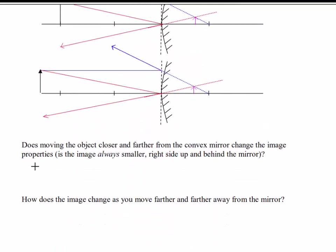So a couple of final questions. Does moving the object closer and farther from a convex mirror change the image properties? Or is the image always smaller, right side up and behind the mirror? It doesn't matter. It's always going to be the same. And does the image change as you move further and further away from the mirror? Well, for sure it does. The exaggeration of the shrinking is more impressive. As you move further and further from the mirror, it gets smaller, but the image properties are always the same: smaller, right side up and behind the mirror.